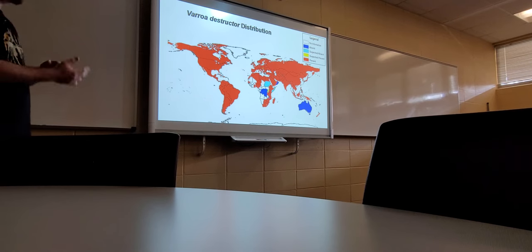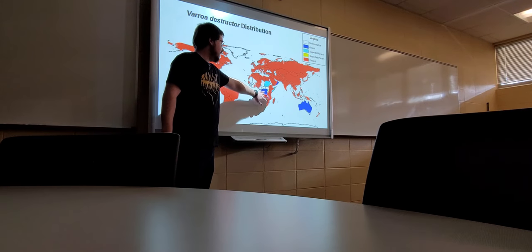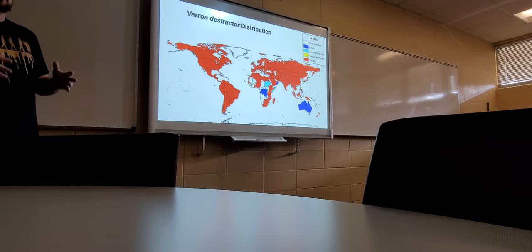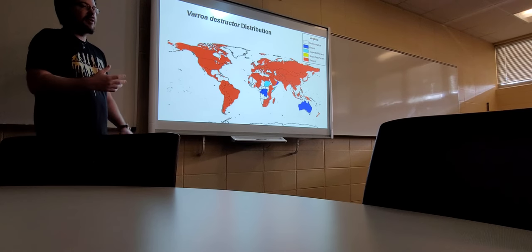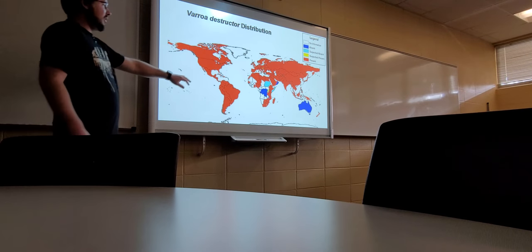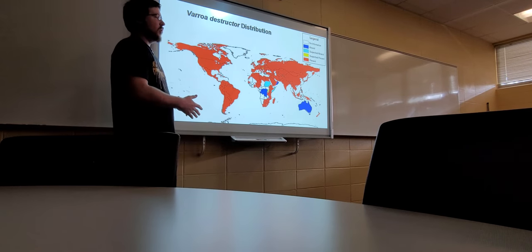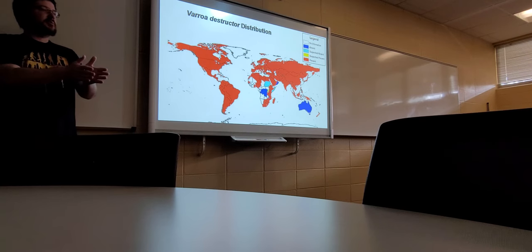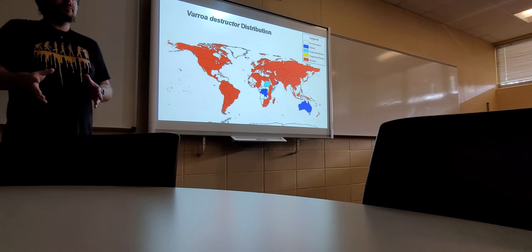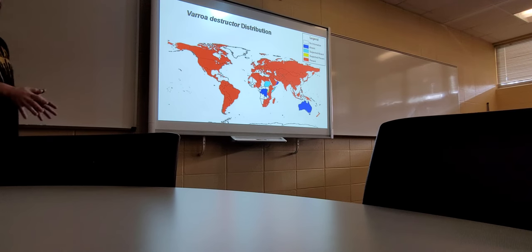The blue areas are places where varroa destructor is not present. I kind of question the blue over here in Africa and in the Middle East because you see how much red is around it. The only thing I could think of is Rosencrantz said that one difference between European honey bees and Africanized honey bees is that they swarm a lot more and that's how they reproduce. This creates an imbalance in all the baby bees being born and it prevents the mites from having their population continue. So it halts them.